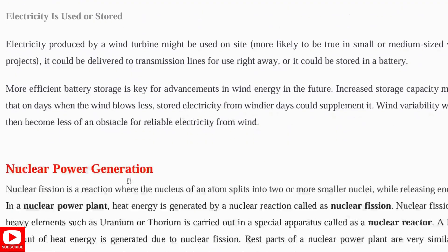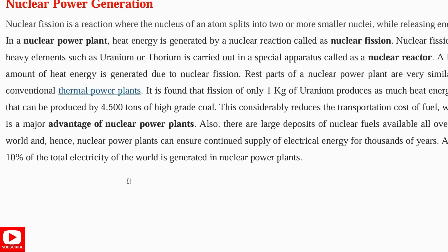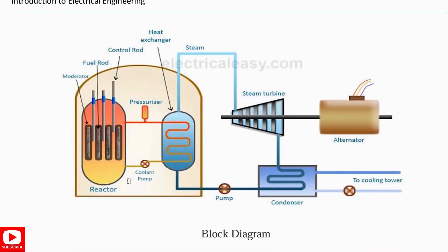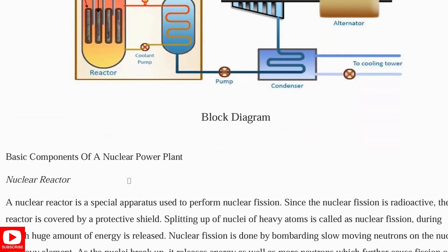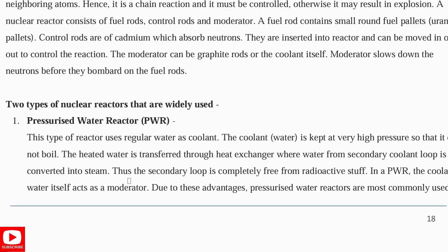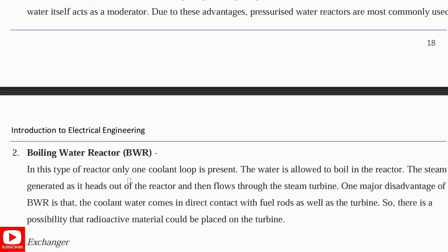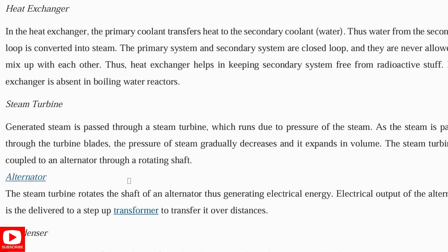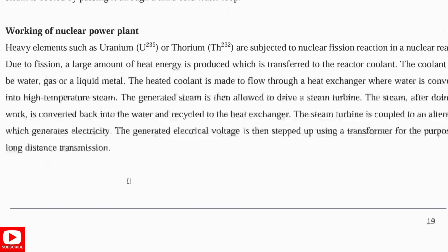Last is nuclear power generation. Nuclear fission is a reaction where the nucleus of an atom splits into two smaller nuclei, releasing energy — that energy is used to produce electricity. Write this block diagram, as most question papers ask about nuclear energy. Explain the reactor, pressurizer, how steam is sent to the steam turbine, and then the condenser and cooling water. Components include: nuclear reactor — two types are pressurized water reactor (PWR) and boiling water reactor (BWR) — heat exchanger, steam turbine, alternator, and condenser, along with the working of the nuclear power plant.